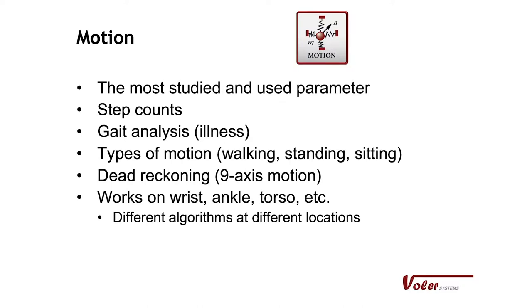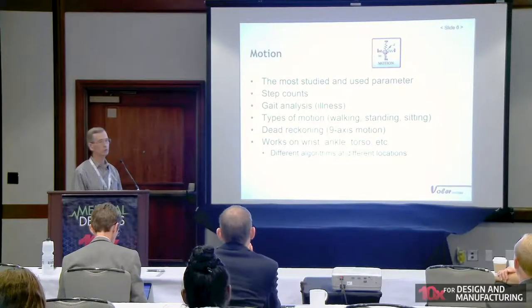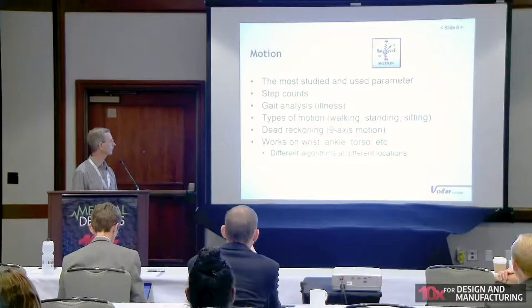Motion sensing has been popular for a long time for step counts, but it measures a lot of other things. Algorithms from motion chip manufacturers let you measure gait, which is an indication of various types of illness. You can determine if somebody is standing, sitting, or walking with a device on the wrist or ankle. Dead reckoning is helpful when you want to know where somebody is and which direction they're going. Motion sensor chips now have nine axes in a single chip — they're good for short term, but over time they lose accuracy, so for hours or days you need GPS, which is power hungry.